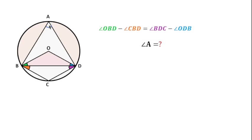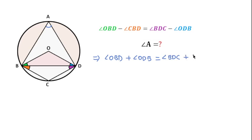To solve this, I will rearrange: angle OBD minus angle CBD equals angle BDC minus angle OBD. Bringing terms across, angle ODB plus angle CBD equals angle BDC plus angle CBD. This means the sum of the green angle and blue angle equals the sum of the orange angle and purple angle. For example, if the green and blue sum is 130, then the orange and purple sum should also be 130.